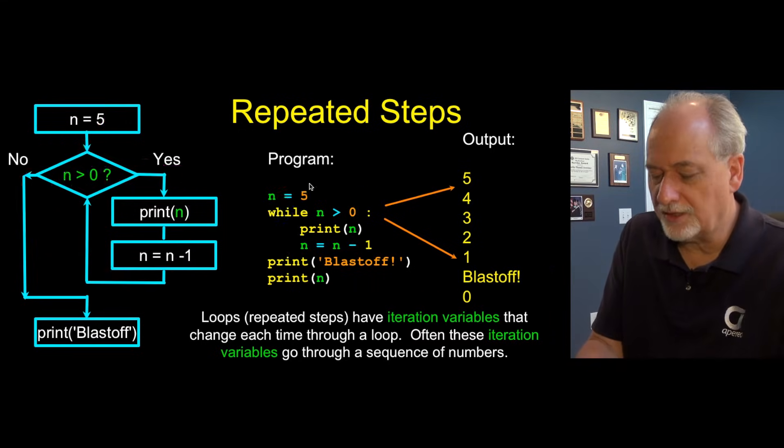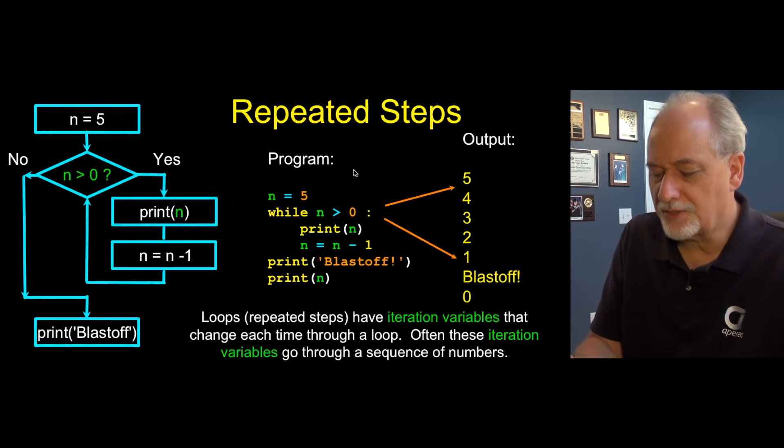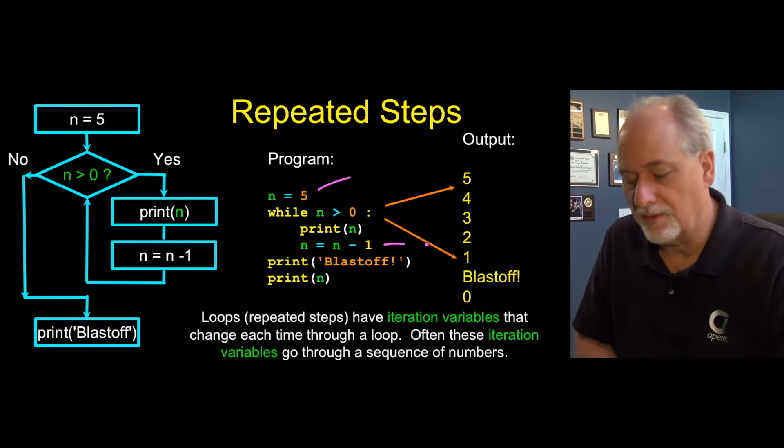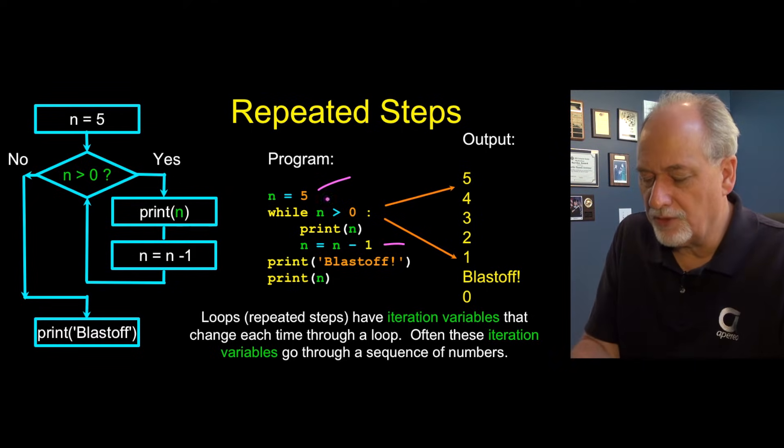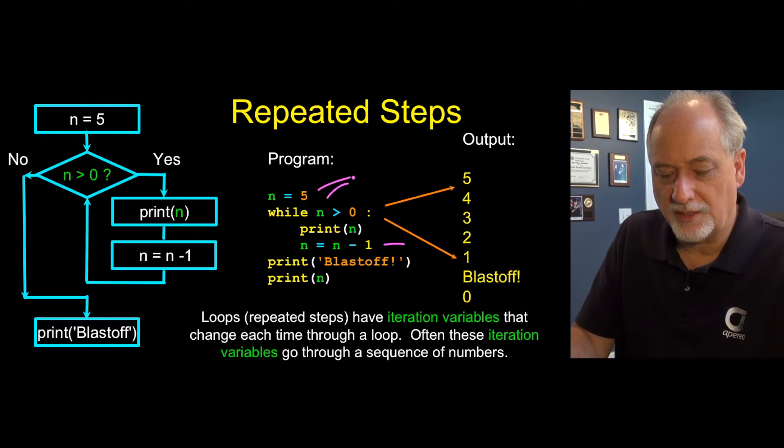And we carefully constructed this n. We set it to five. Then we carefully subtracted one each time through the loop. And then we're using that to control when to exit the loop. And so you could think of this loop as, for now, running five times.